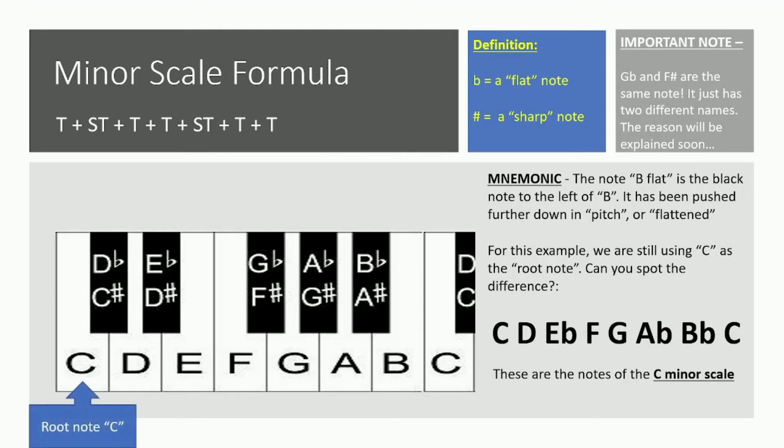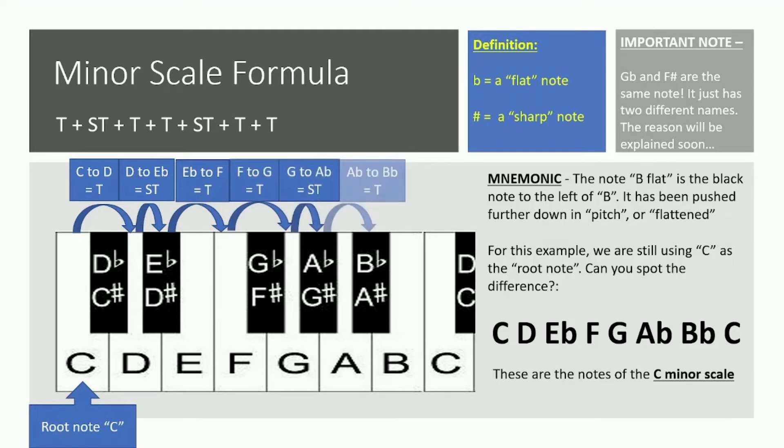Starting with the root note again, jumping up a tone. Then a semitone, D to E flat, and we're using flats for a reason. I'm going to tell you why on the next slide. E flat to F, F to G which is another tone. G to A flat semitone, A flat to B flat tone, B flat to C tone. So you can see each of these steps matches the formula: tone, semitone, tone, tone, semitone, tone, and finally tone over here.